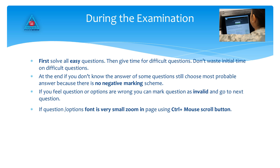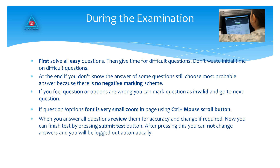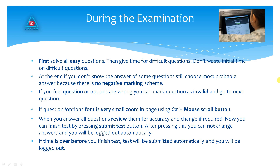If you feel a question or its options are wrong, you can mark the question as invalid and go to the next question. If the question or option font is very small, zoom in on the page using Ctrl plus mouse scroll. When you have answered all questions, review them for accuracy and change if required. You can finish the test by pressing the Submit Test button. After pressing this, you cannot change answers and you will be locked out automatically. If time runs out before you finish, the test will be submitted automatically and you will be locked out.